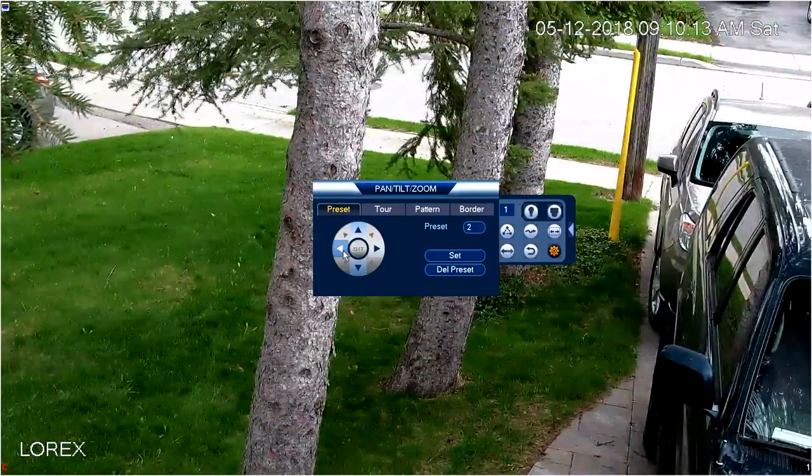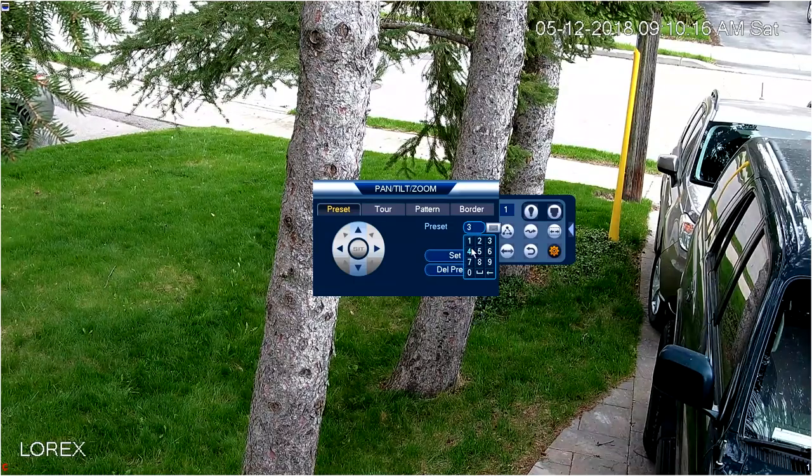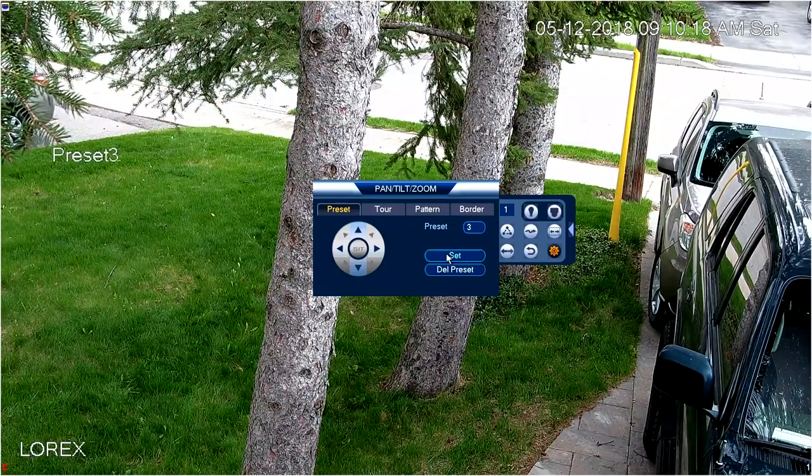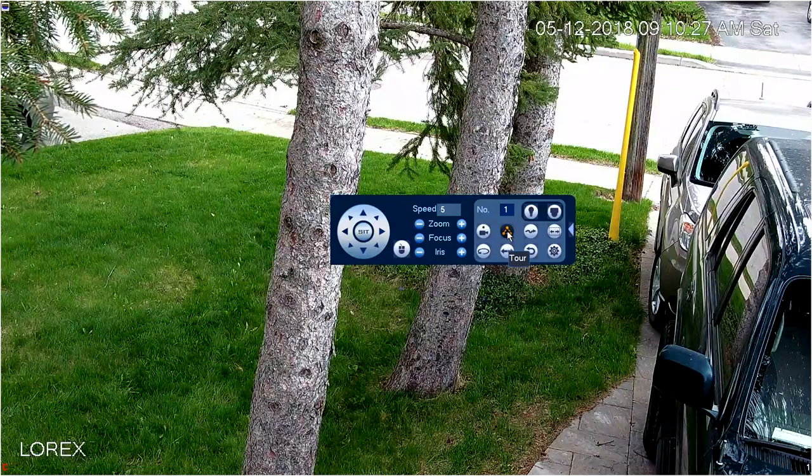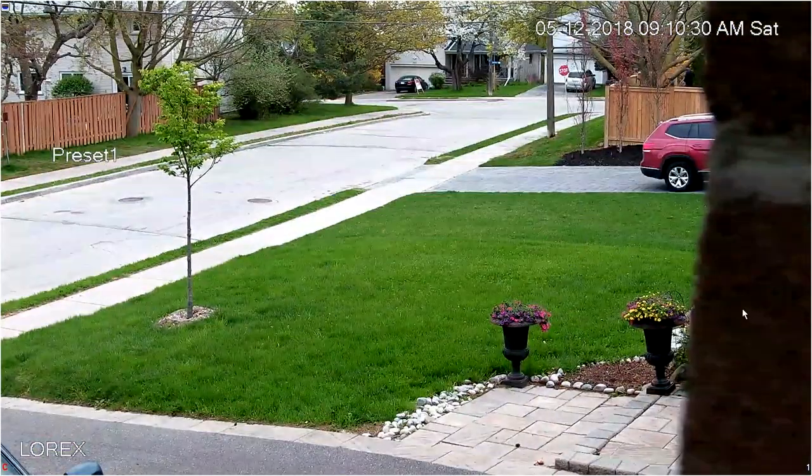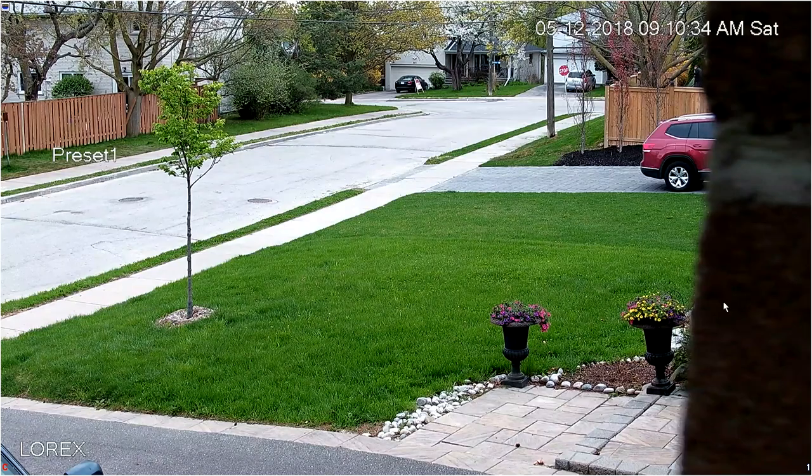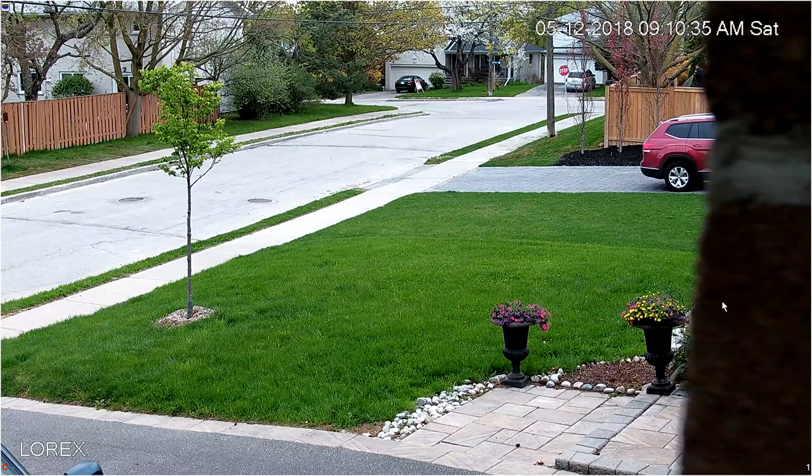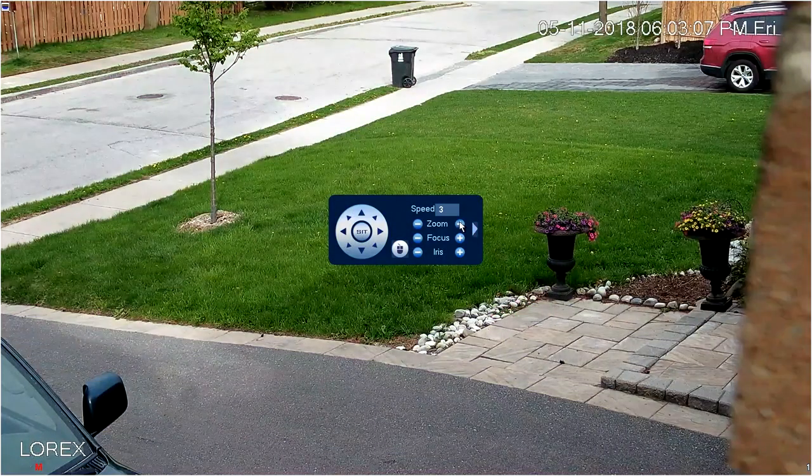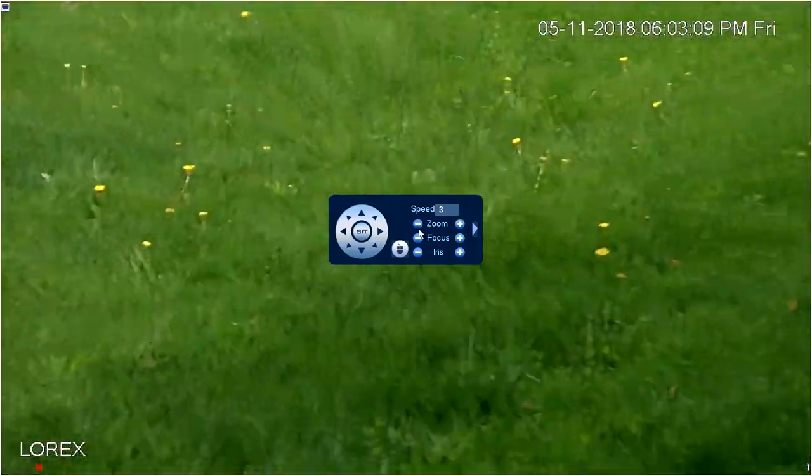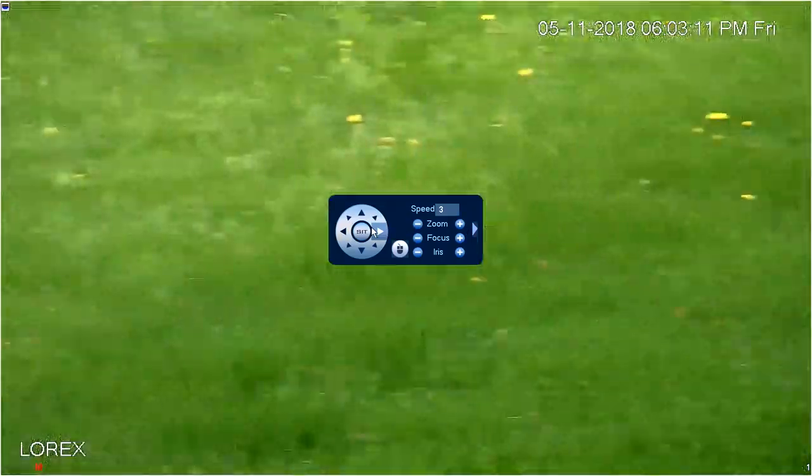This camera can also be programmed to have preset locations and these presets can be used to create a tour. Here we've programmed a short tour from one preset to another. The 44P12 provides stunning, vivid, and sharp images in day and night. The zoom function allows you to enlarge an image and reframe to suit specific needs.